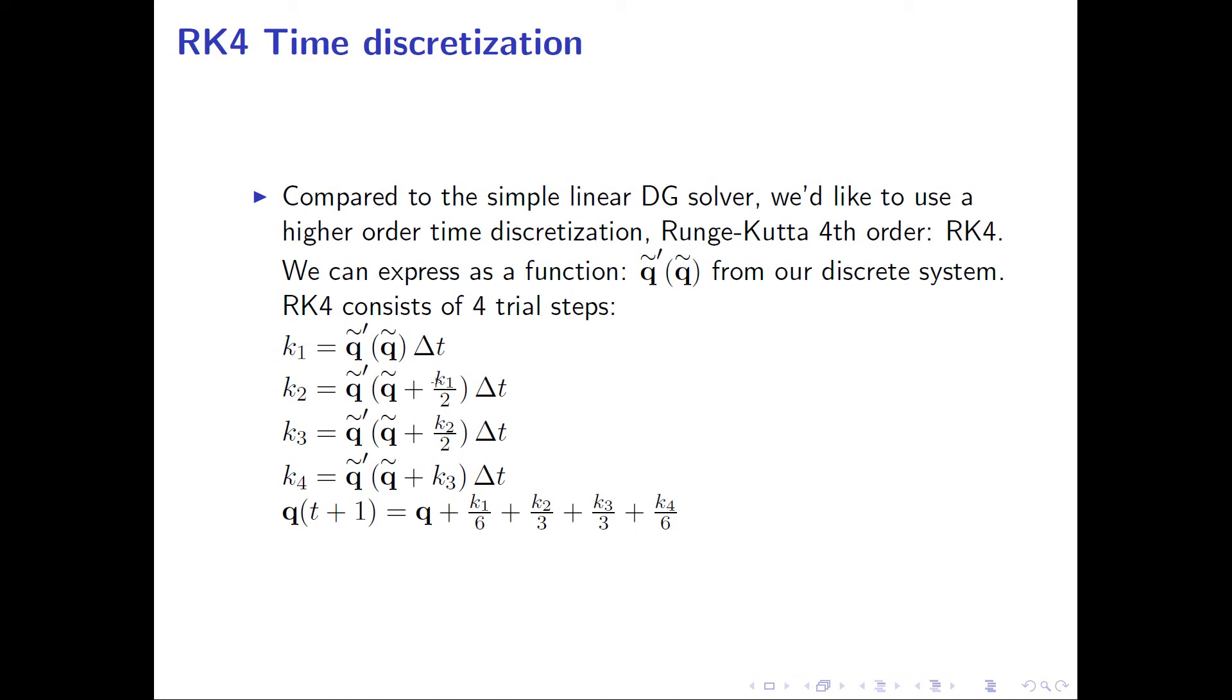A Runge-Kutta consists of four steps. Each of these steps we can think of as a trial step. In this first step, we look at what the expected change in our coefficients would be across our full time step.